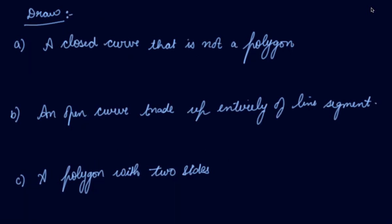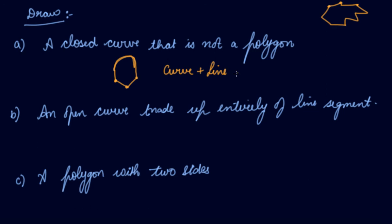Now, draw a closed curve that is not a polygon. If I draw a closed curve with line segments, it becomes a polygon. But when I draw a closed curve that is a combination of a curve plus line segments, this is a closed curve which is not a polygon — it is not a polygon, whereas it is a closed curve.